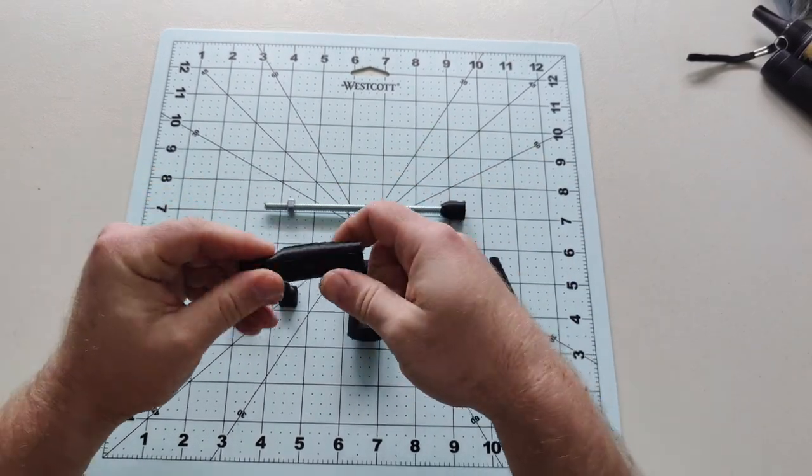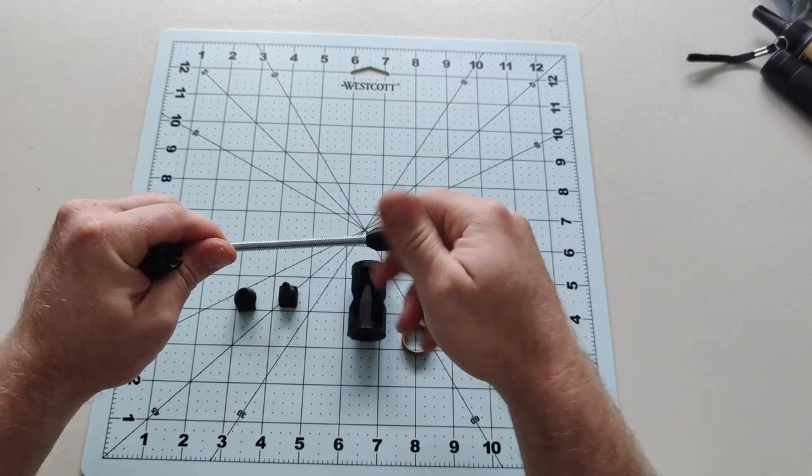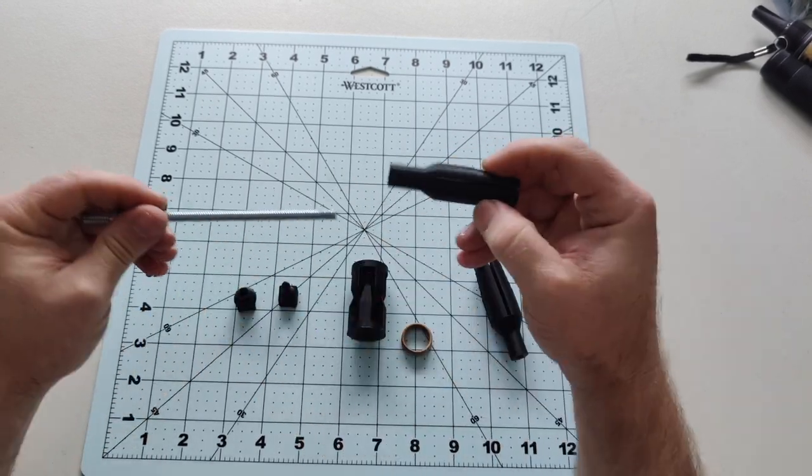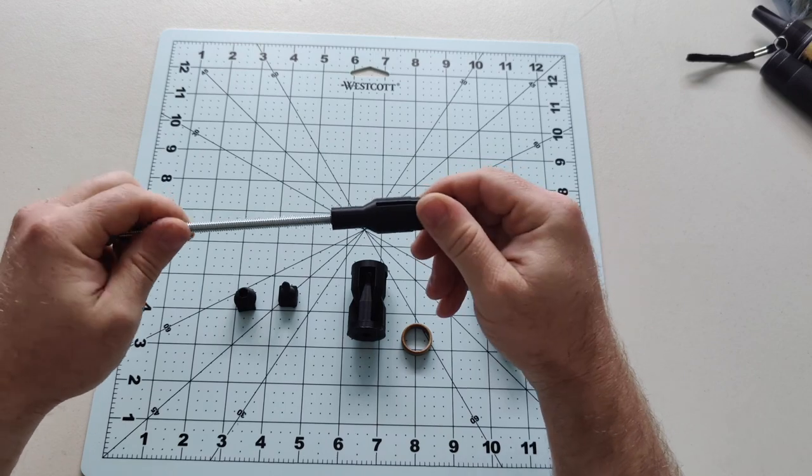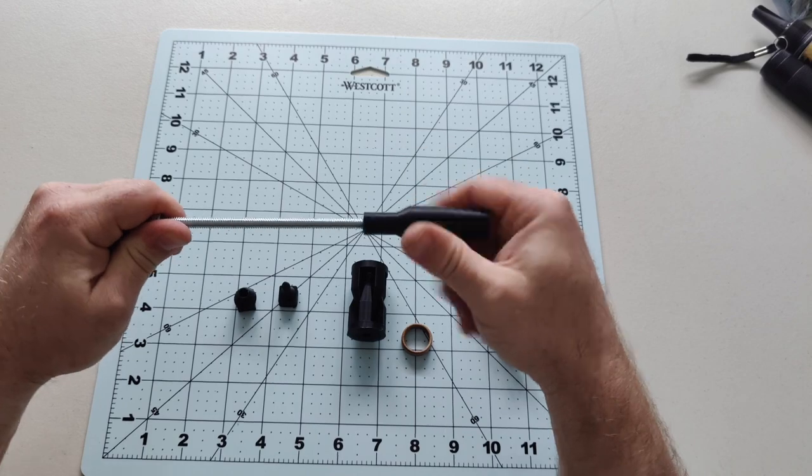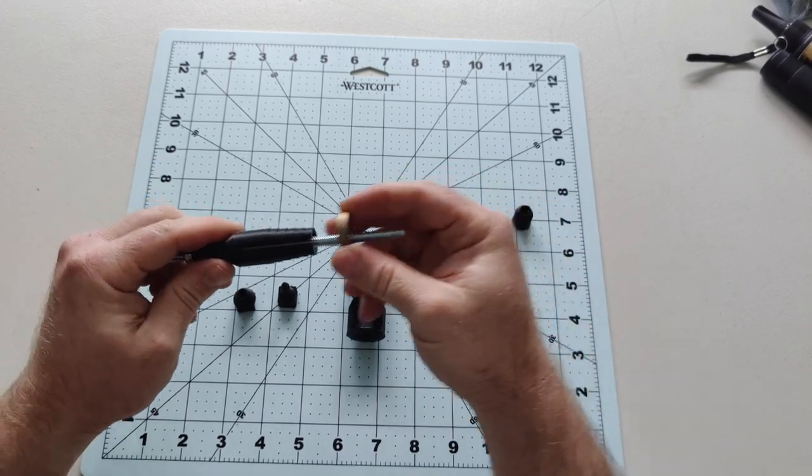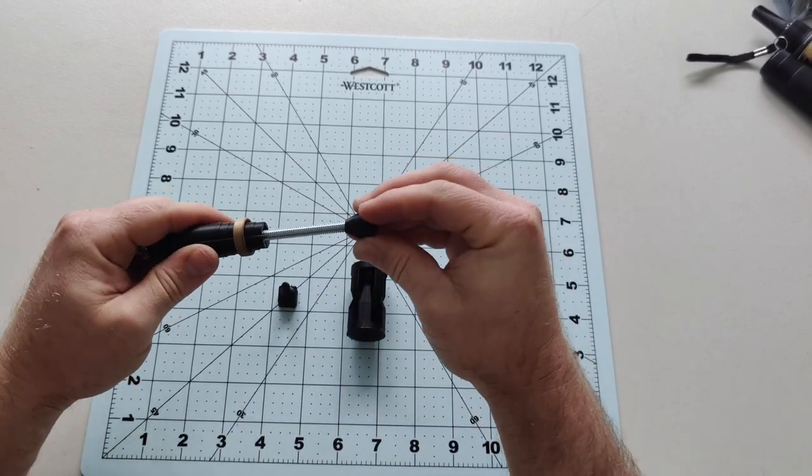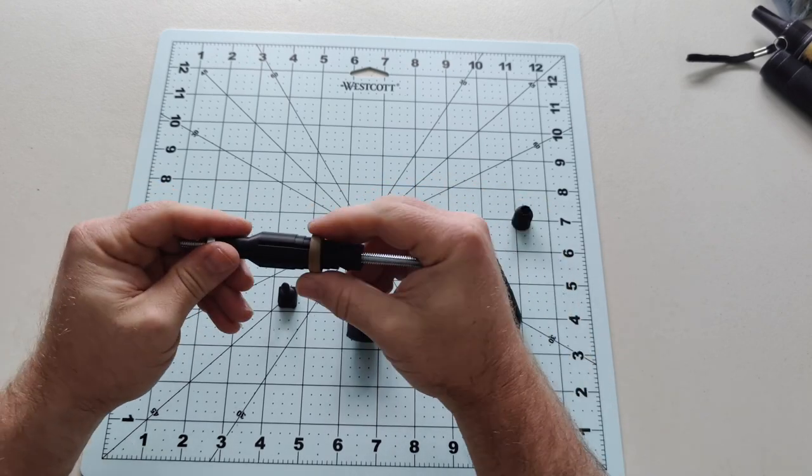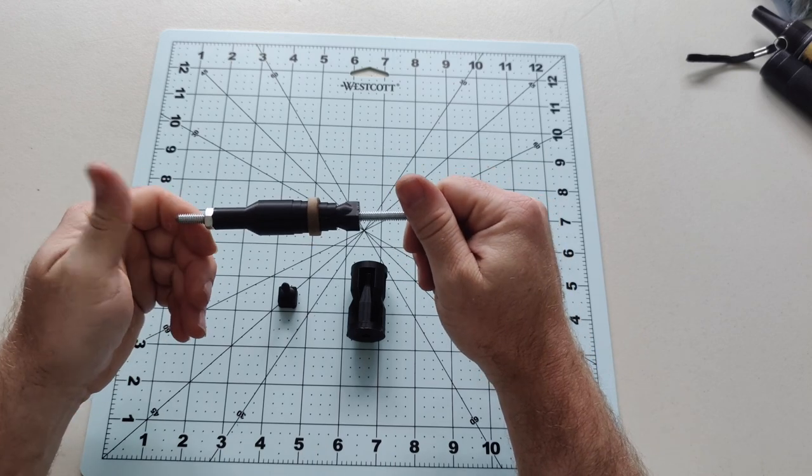So how this works is you've got the expanding ring mandrel. You take this off. This is your tailstock piece. You're going to screw that on right there. So what that does is it'll grip that right there so that you can then spin your ring right on your mini-lathe.